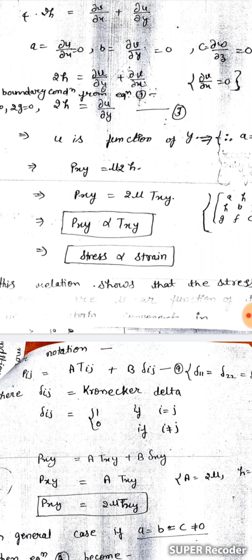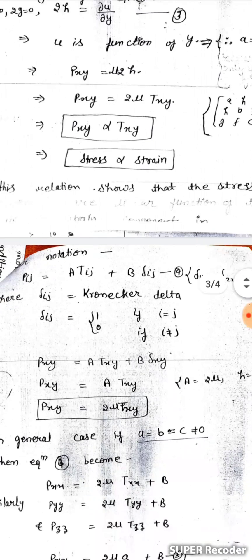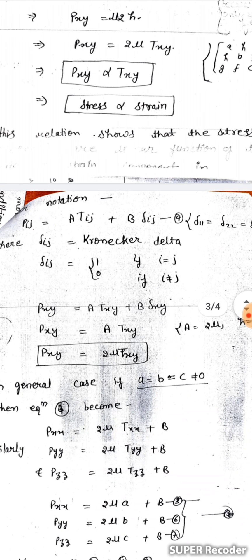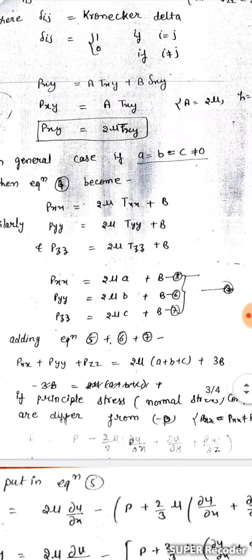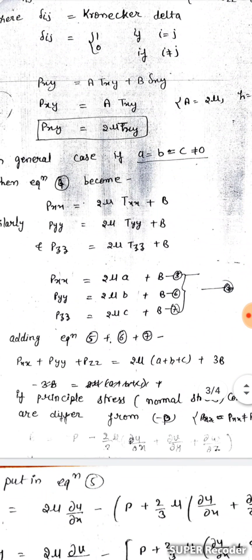So Pxy = A*Txy + B*delta_xy. If A = 2*mu and h = Txy, then Pxy = A*Txy + delta_xy = 0, so Pxy = 2*mu*Txy. In other words, stress is proportional to strain.